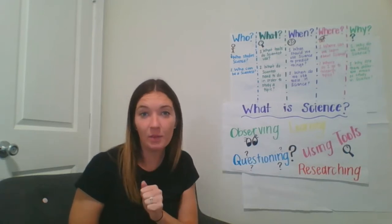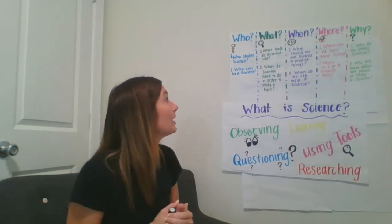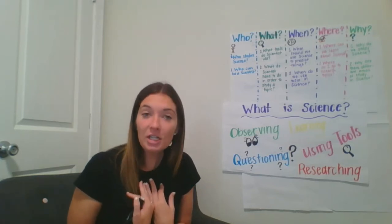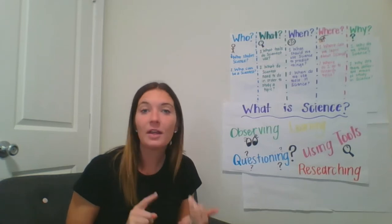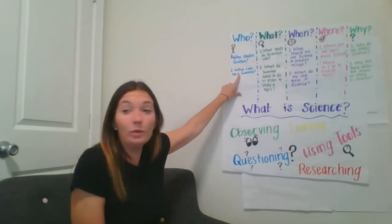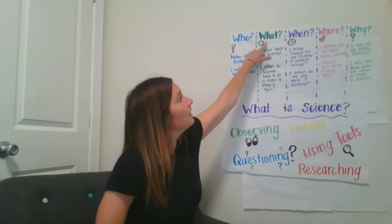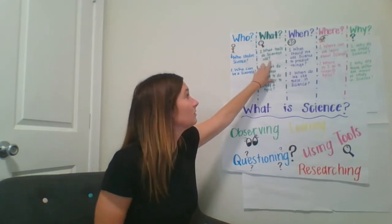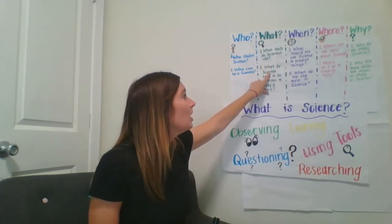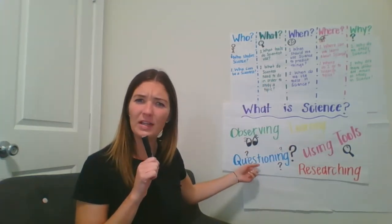There are five types of questions that we are going to mainly focus on today: who, what, where, when, and why. I want you to try to think of some on your own. As you're doing that, I'm going to help you with some of the questions that I came up with under each of those five question names. Remember that who is the question word that talks about people. So who studies science? Who can be a scientist? Are there any other who questions that we could add to our anchor chart? The next one is what — what tools do scientists use? We saw a few in the pictures in our PowerPoint. What do scientists need to do in order to study a topic?